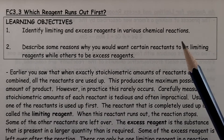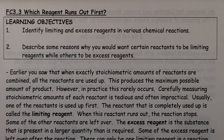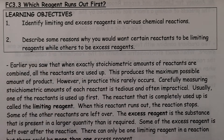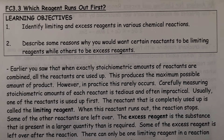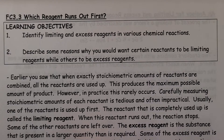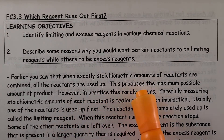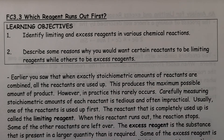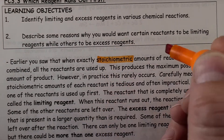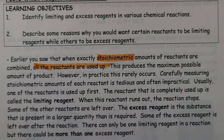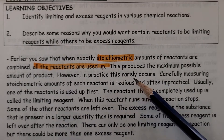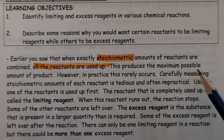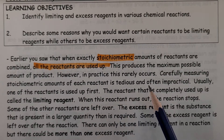We'll go through this, highlight some things, and hopefully you'll be ready for 3.4, which actually involves the calculations. Also, we likely did the SMORE lab right before this, and you can apply what you learned there. So earlier, you saw that when stoichiometric amounts of reactants are combined, all of the reactants are used up, producing the maximum possible amount of product. However, in practice, this rarely occurs — carefully measuring stoichiometric amounts of each reactant is tedious and often impractical.